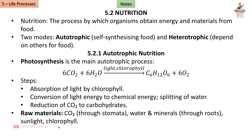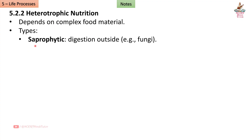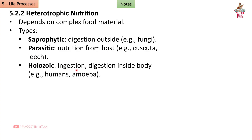Excess food is stored as starch. Section 5.2.2: Heterotrophic Nutrition depends on complex food material. Types include: Saprophytic — digestion outside the body, example fungi; Parasitic — nutrition from a host, example Cuscuta and leech; Holozoic — ingestion and digestion inside the body, example humans and amoeba.